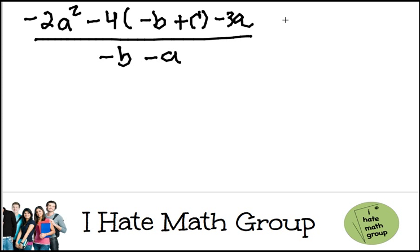Hi guys, welcome back. So we have this nasty expression and they tell me that a equals negative 1, b equals negative 2, and c equals 3. So how do I do it?